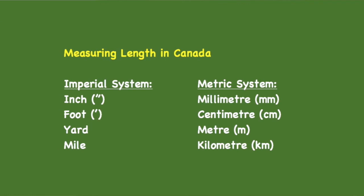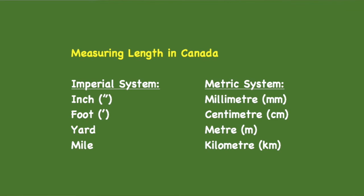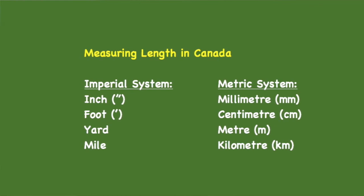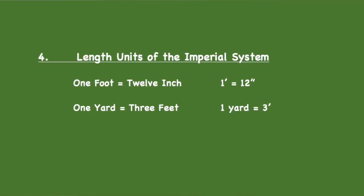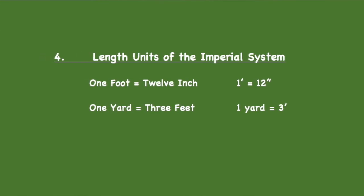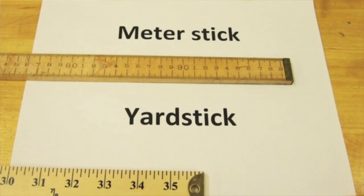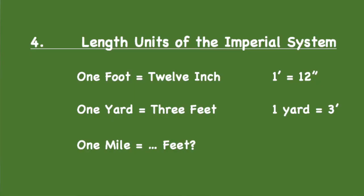In the imperial system, first we have the inch, then the foot — and a foot is the length of 12 inches. This is something you really have to remember and memorize: one foot is 12 inches. A yard stick is shorter than a meter stick, about 10% shorter, and a yard is 3 feet. One yard is also something you need to remember. And since one foot is 12 inches, that means one yard would be 3 times 12, which is 36 inches.